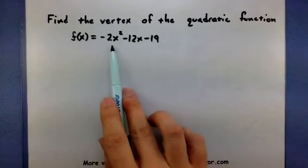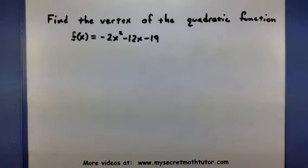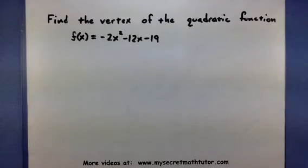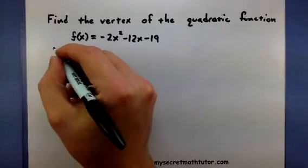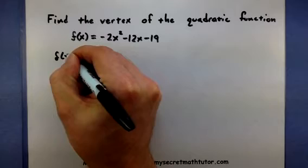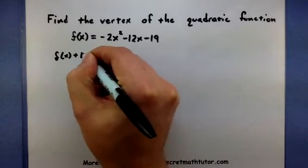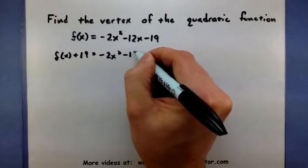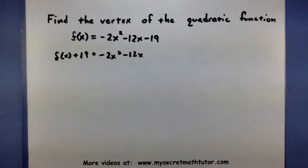I want to complete the square on my x's, so I'm going to start isolating those x's onto one side. This means I'm going to add 19 to both sides so that I just have my x's on one side. I know this isn't proper function notation, but for the moment, it's going to work out just fine.